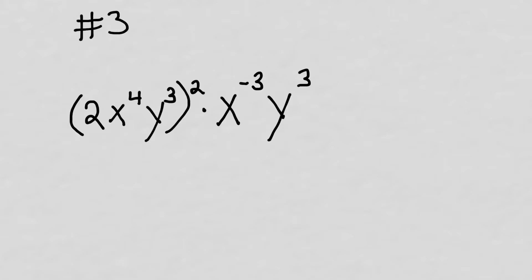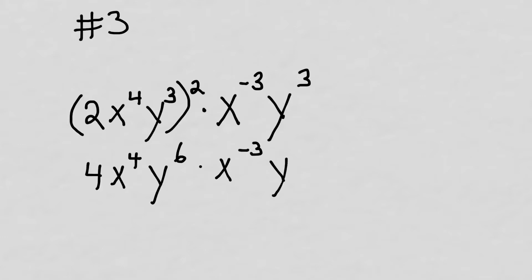Number three is a little more difficult because we've got a bunch of different things going on. We've got the two on the outside of the parentheses for the quantity two x to the fourth y to the third. The two on the outside means everything inside the parentheses is squared, so I have to square all three things inside. Two squared is four. X to the fourth squared — we multiply the exponents — we get x to the eighth.